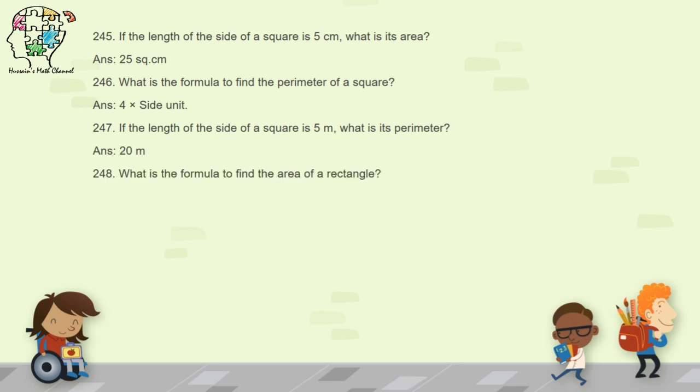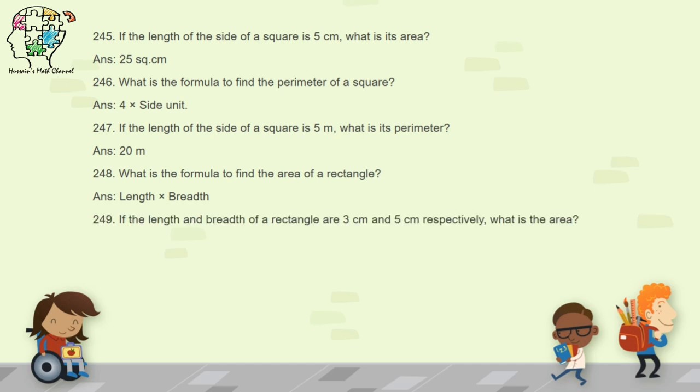Question 248: what is the formula to find the area of a rectangle? The area of a rectangle equals length times breadth, and you write square units. Question 249: if the length and breadth of a rectangle are 3 centimeters and 5 centimeters respectively, what is the area? Multiply 3 and 5 to get 15 square centimeters.